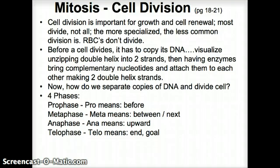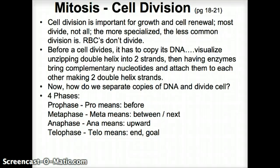After that, we have to assure that this genetic material goes to each side of the cell, so when it divides, one copy is in each daughter cell. We can describe this process in four phases. We have prophase — 'pro' means before. A metaphase — 'meta' means between or next. An anaphase — 'ana' means upward. And a telophase — 'telo' means end or goal.